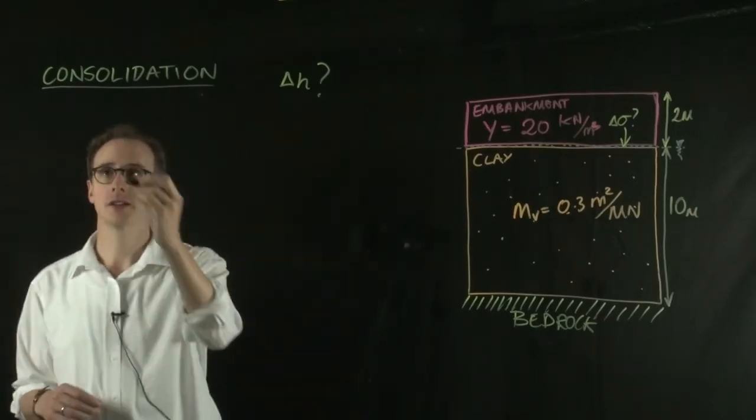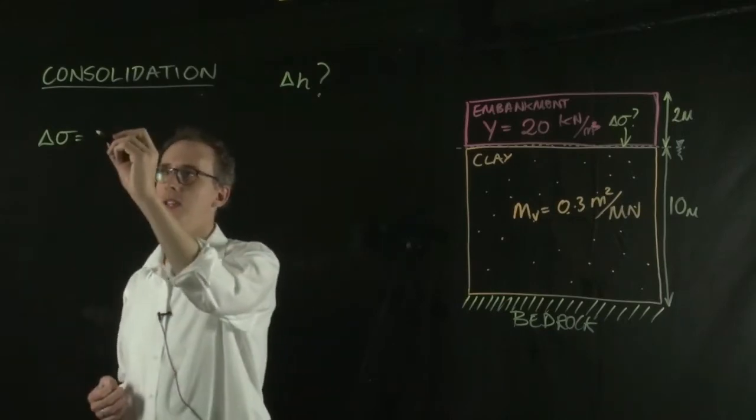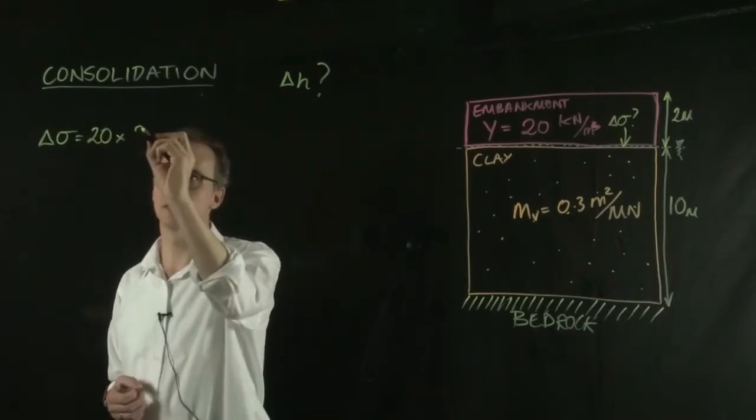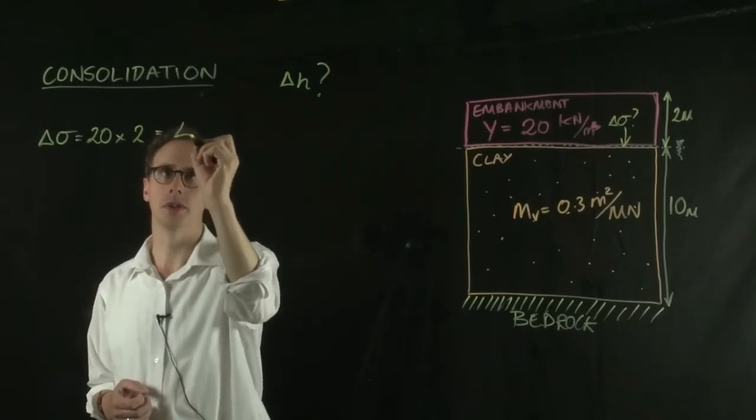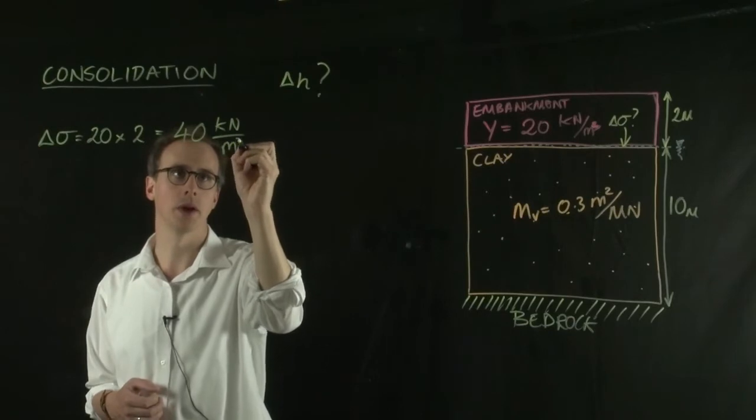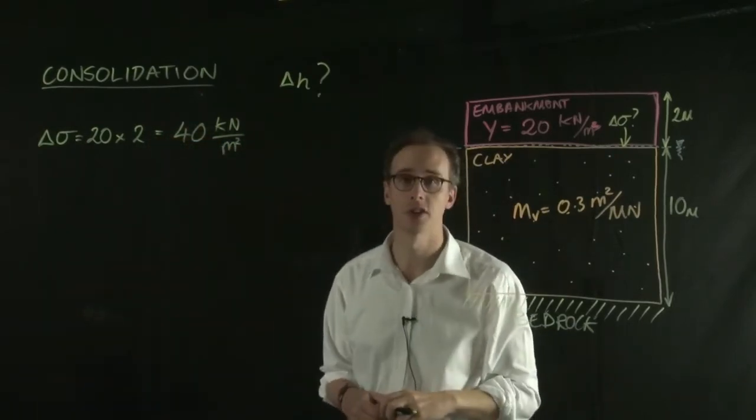So the stress, or the change in stress, is equal to the unit weight of the embankment multiplied by its thickness, which equals 40 kilonewtons per meter squared. That's the change in stress exerted on the top of the clay.